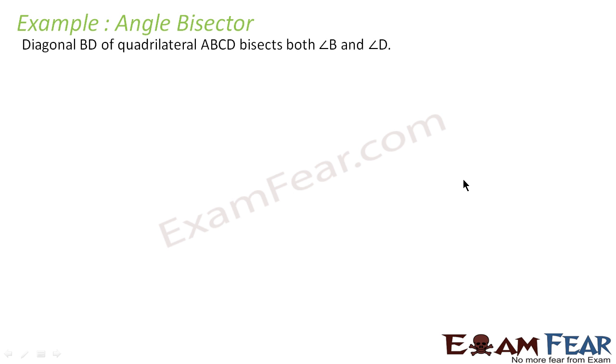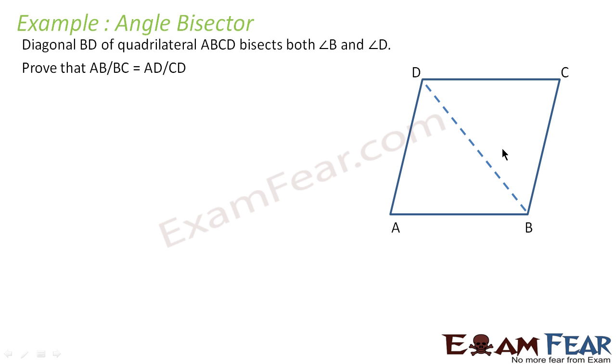Let's take some more example of angle bisector. Diagonal BD of quadrilateral ABCD bisects both angle B and angle D. We have to prove that AB by BC is equal to AD by DC. So let's see what question is saying. Let's draw first the quadrilateral ABCD. This is the quadrilateral ABCD. Now the question is diagonal BD of the quadrilateral bisects angle B and D. So let's draw first diagonal BD. The question says this bisects angle B and D, that is this angle is equal to this angle 1 dash, this is 2 and this is 2 dash. This angle 1 is equal to angle 1 dash, angle 2 is equal to angle 2 dash.